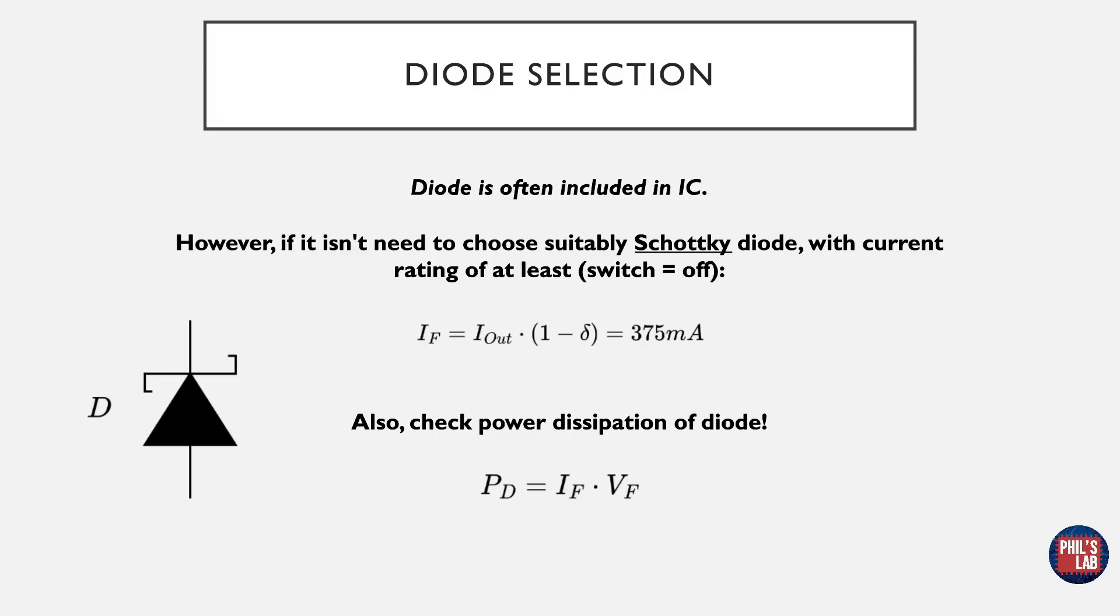After the magnetic element, we want to look at the diode, and this is often included in the IC, and make sure to check your IC's limits. However, if you need to include an external diode, you need to choose a Schottky diode to minimize switching losses. Two important factors. One is the current rating, which needs to sustain the current when the main switch is off. And so the forward current has to be the maximum output current times one minus the duty cycle, because of course the switch is off. So in our case that would be 375 milliamps. And depending on which Schottky diode you choose, the forward voltage will of course be different between diodes. The forward voltage times the maximum forward current is of course the power dissipation, and our Schottky diode needs to be able to handle that.